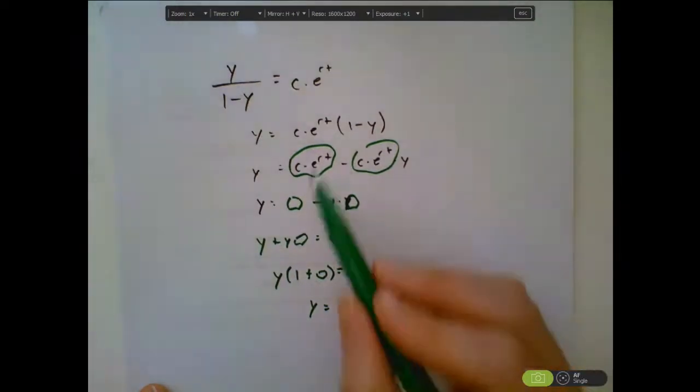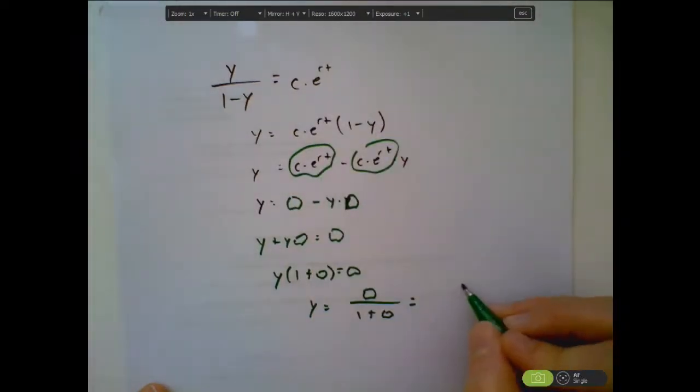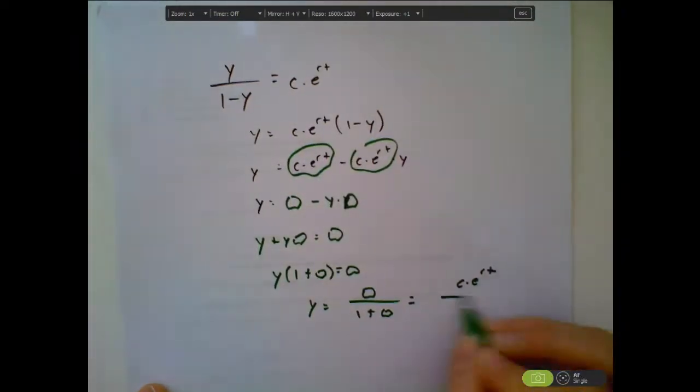What was blob? Alright, it was this business. So we got c times e to the rt over one plus c times e to the rt.